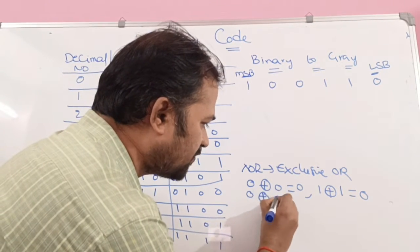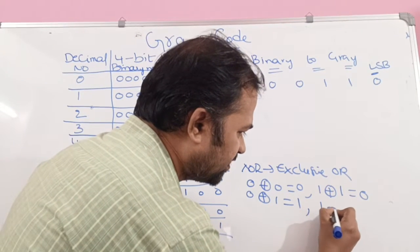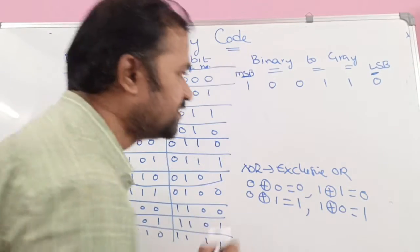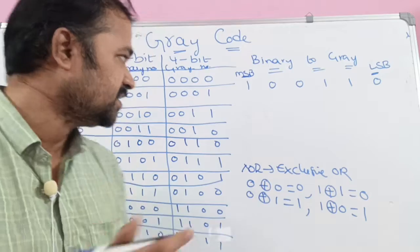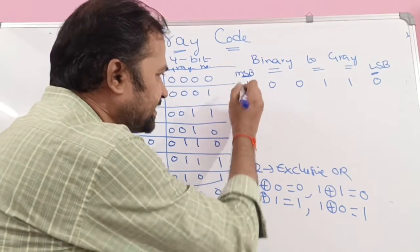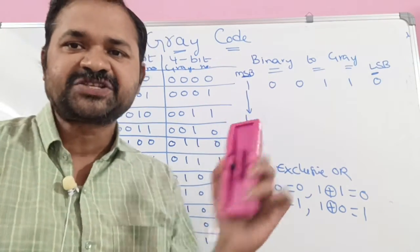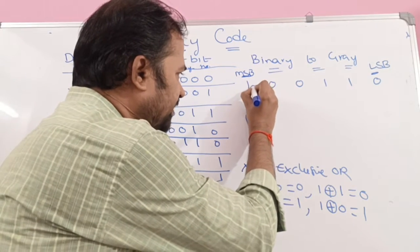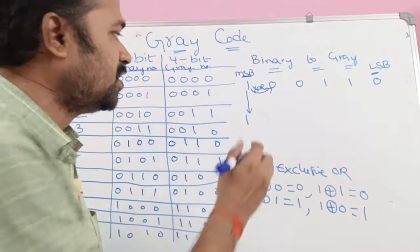Whereas if the bits are different, then the result is 1. So 0 XOR 1 equals 1 — bits are different, so the result is 1. And 1 XOR 0 is equal to 1 — bits are different, so the result is 1. Here we have to perform XOR operation. We have to keep the most significant bit as it is — there is no change in the most significant bit. Next we perform the XOR operation: 1 XOR 0 is 1.